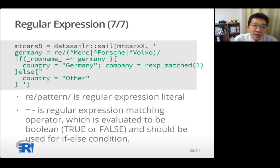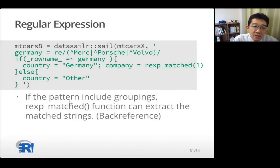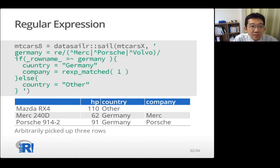And if it's true, so it's matched, country column has Germany. And also this function is executed. And what is this function? This function is back reference function. When a pattern includes groupings like these parentheses part, this is called grouping in regular expression, the rexp_matched function can extract the matched strings. So in this case, when the row name has Mercedes, Merc is matched and Merc part is extracted from string. So if the row name has Merc, the Merc part is extracted. If it's Porsche, the Porsche part is extracted. You can see this is working.